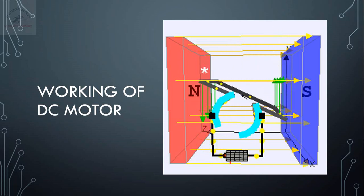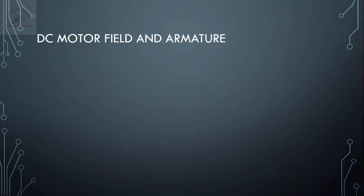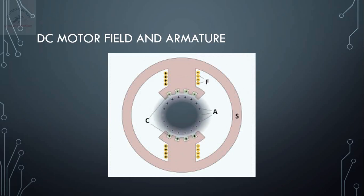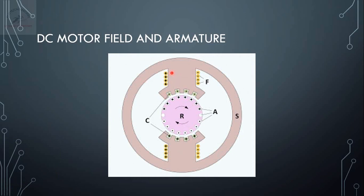We have recalled the working of a DC motor. Now let us go into our topic to understand the classification of the DC motor. We are classifying the DC motor based on its field and armature. This diagram shows the field windings wound on a pole shoe, the armature, and the direction of rotation.